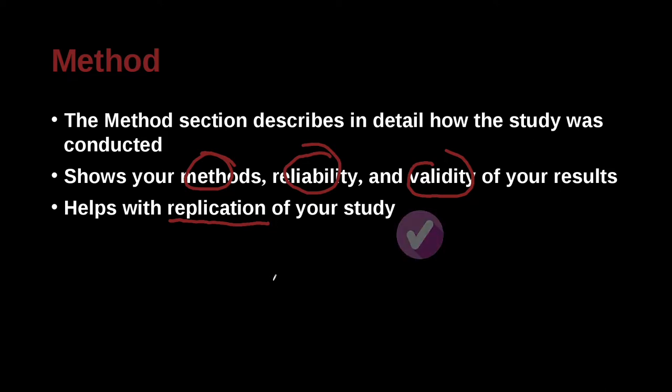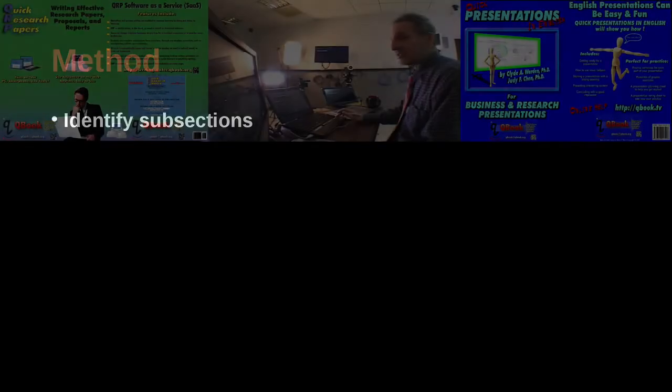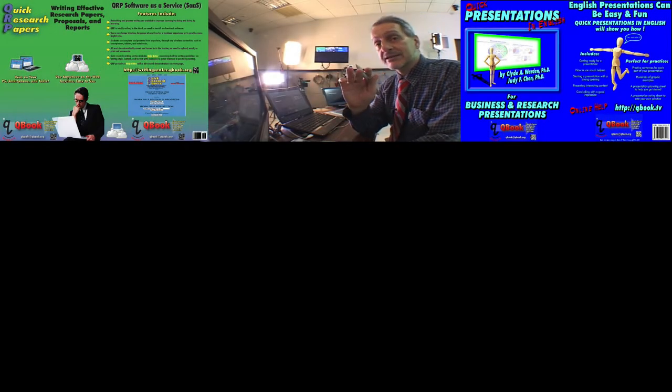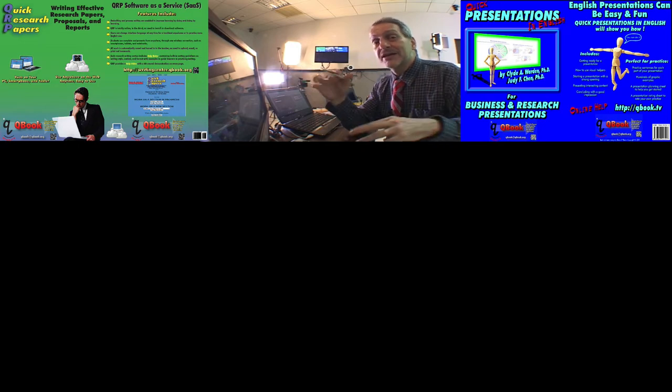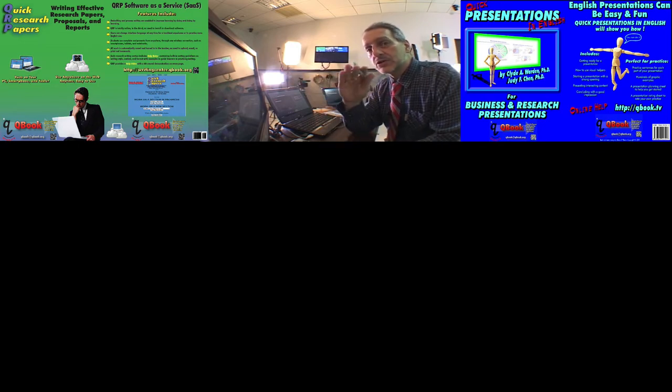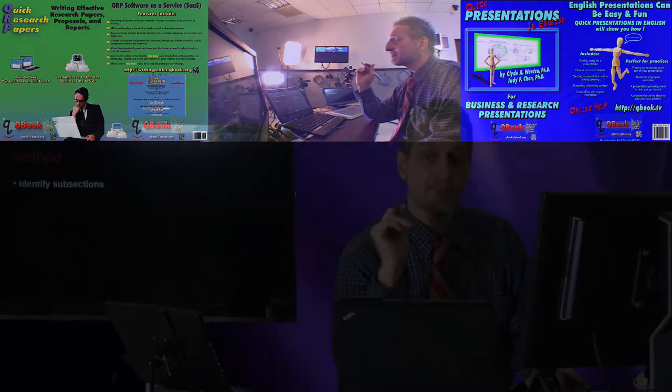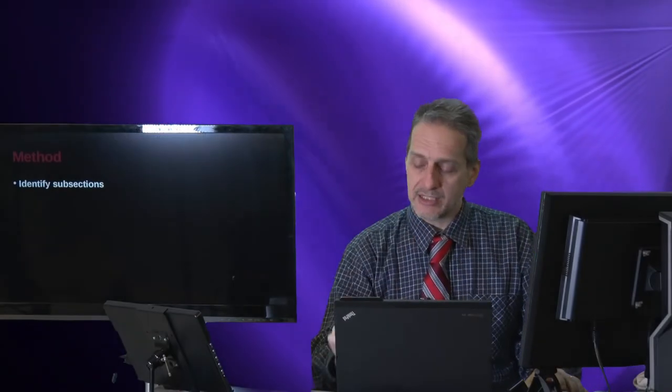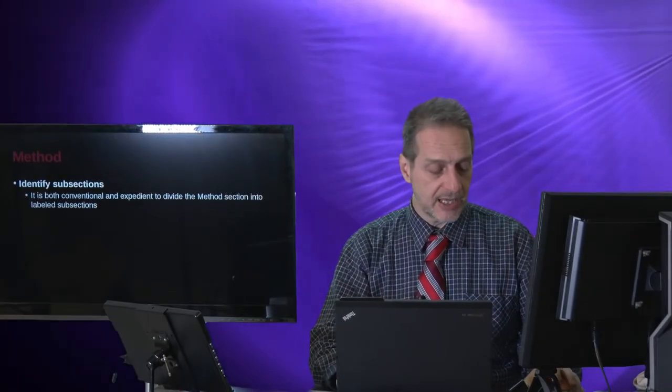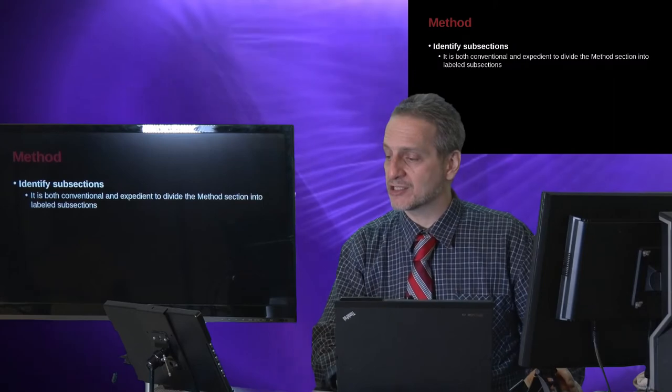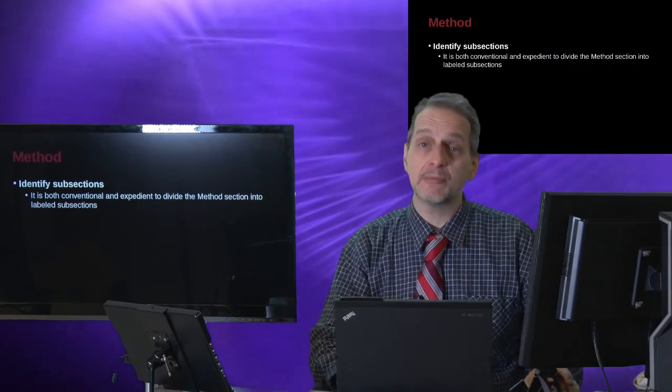If they can repeat what you did, then you have written a good methodology. Inside the methodology, you may have subsections. Why would you have subsections? Well, it's possible that the methodology is very complicated with lots of things to it. So you break it into parts. Breaking your methodology into parts is acceptable, and we would make subsections for that. You need to label them clearly.